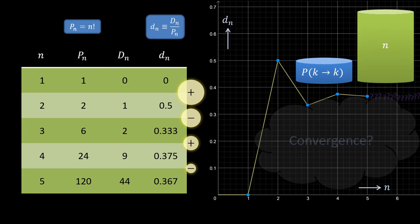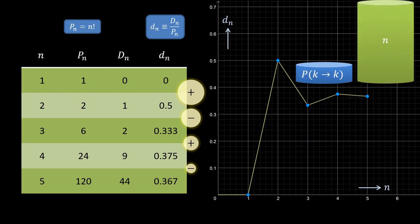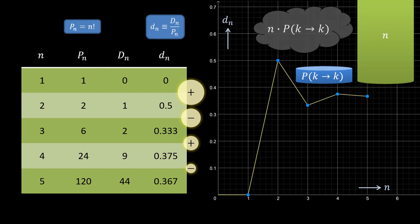And the probability that a random permutation is not a derangement can be roughly associated with the product of these two entities. So these two effects might cancel out to some extent.